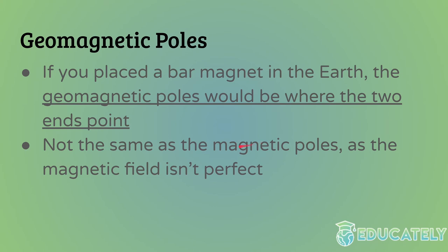You might wonder why that isn't the same as where the magnetic poles are. The reason is that the magnetic field isn't a perfect dipole — it's not a perfectly even magnet. The magnetic poles don't have to be on opposite ends of the planet, but geomagnetic poles do, because a bar magnet placed inside the Earth would have to be perfectly straight. Therefore, the geomagnetic poles have to be directly opposite one another, and they can't mathematically match the magnetic poles, which aren't necessarily opposite one another.